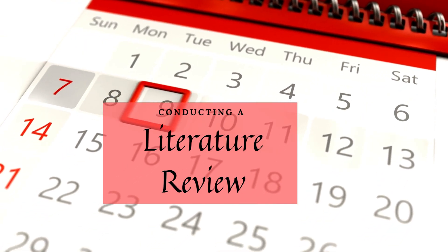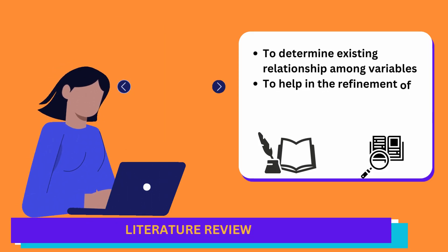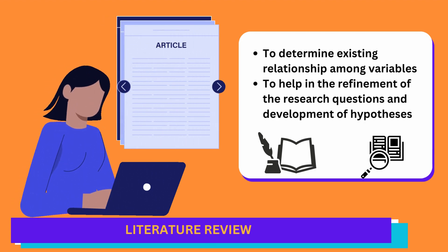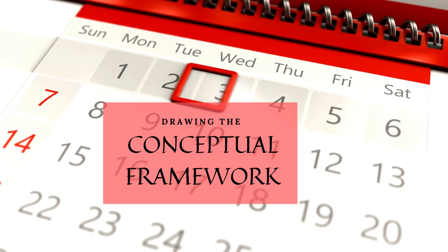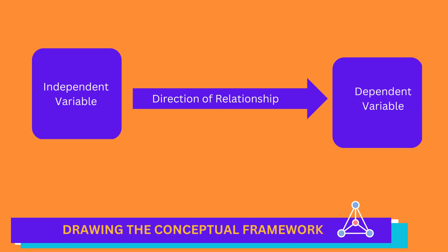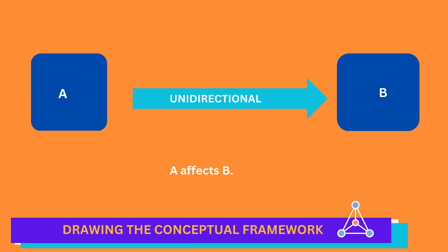Once your variables have been selected, you should undertake a literature review to determine the existing relationships between them. This will aid in the refinement of your research questions and the development of your hypotheses. Create a graphical depiction of your conceptual framework that shows the likely relationships between or among the variables. Use arrows to show these relationships. Unidirectional arrows point from the independent variable to the dependent variable, showing a one-way relationship.